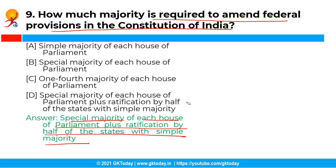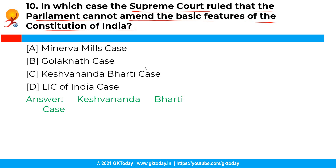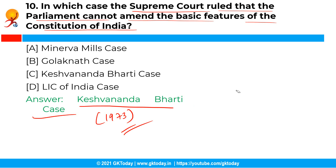The next question is: in which case did the Supreme Court rule that parliament cannot amend the basic features of the Constitution of India? The correct answer is option C — the Kesavananda Bharati case. Article 368 deals with the powers of parliament to amend the constitution, and in the Kesavananda Bharati case of 1973, the Supreme Court ruled that parliament cannot amend those provisions which form the basic structure of the constitution.